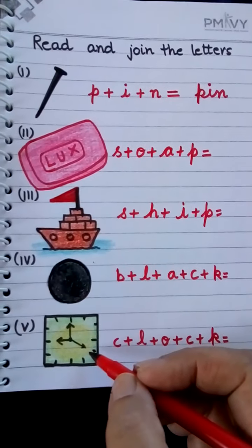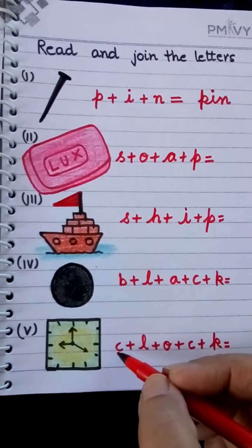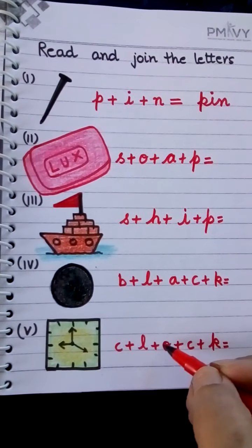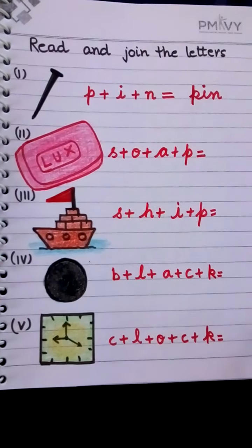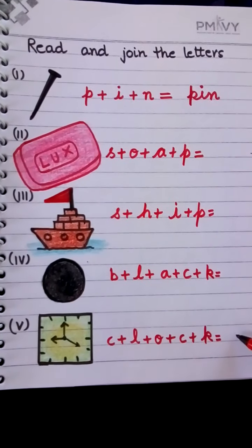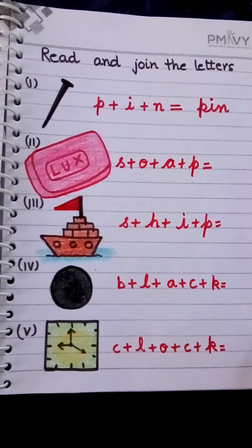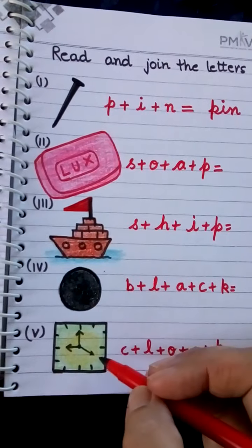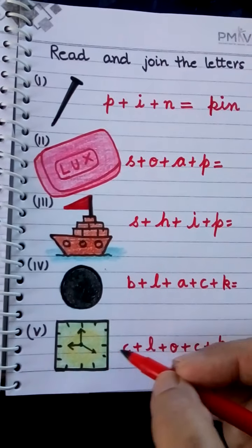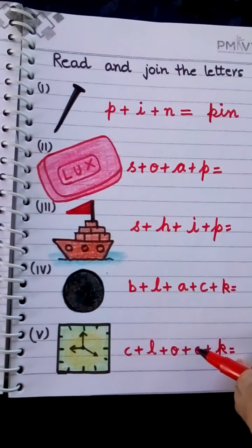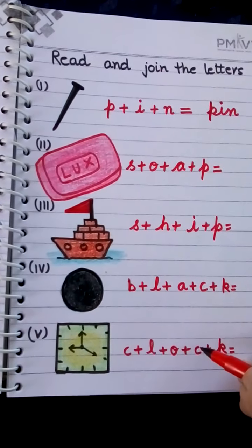This is Clock. C-L-O-C-K. Clock. You will write here Clock. This is the picture of Clock. This is a five-letter word.